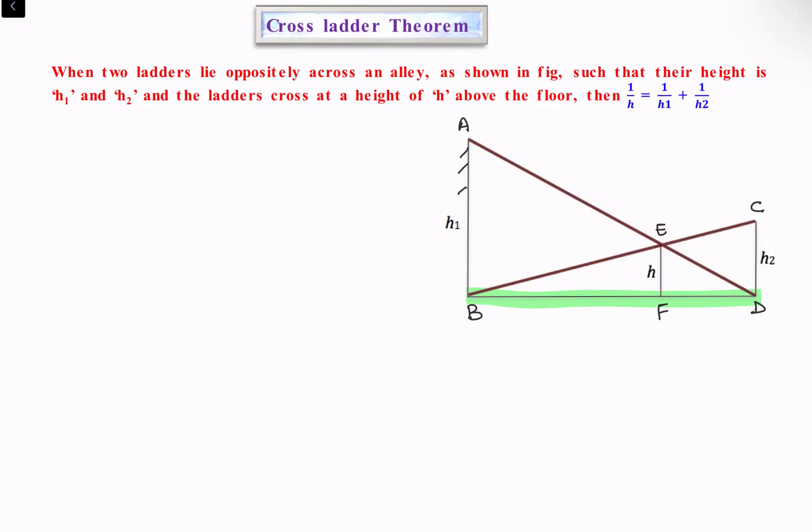AB is one building and CD is another building. Inclined from the base of one building to the other building, these are the two ladders.